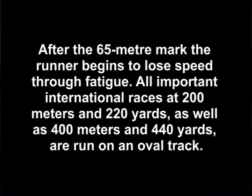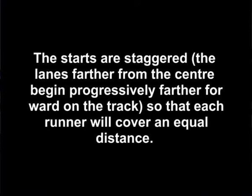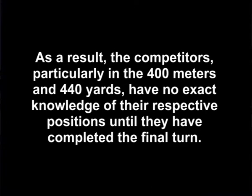All important international races at 200 meters and 220 yards, as well as at 400 meters and 440 yards, are run on an oval track. The starts are staggered, with lanes farther from the center being progressively farther forward on the track, so that each runner covers an equal distance. As a result, the competitors — particularly in the 400 meters and 440 yards — have no exact knowledge of their respective positions until they have completed the final turn.